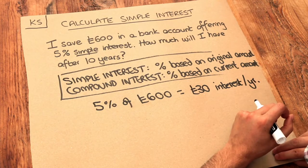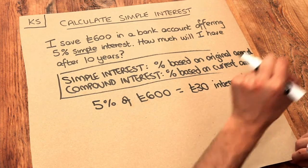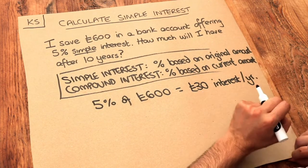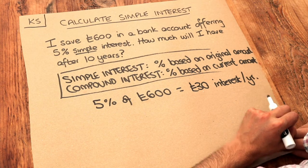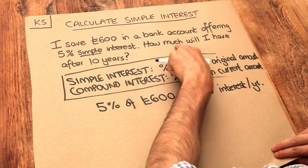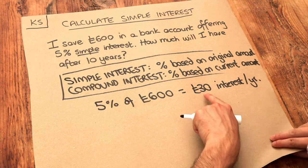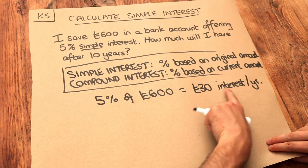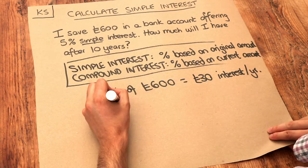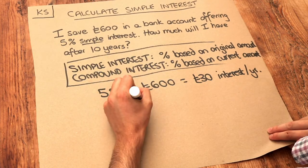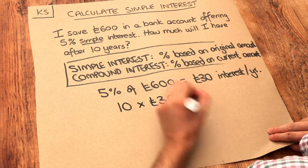Because it's simple interest, we do indeed get £30 every year — that amount of interest we get each year is not going to increase. It's asking how much will I have after 10 years. Well, each year they're giving us £30 interest, so we can do 10 years times £30.